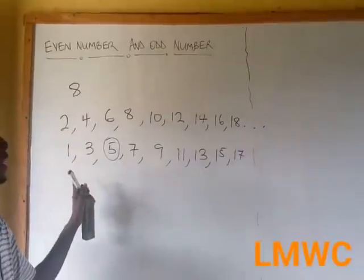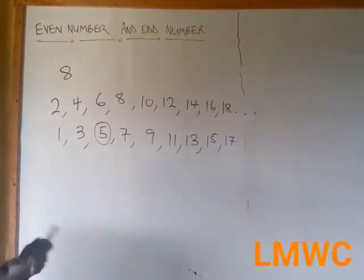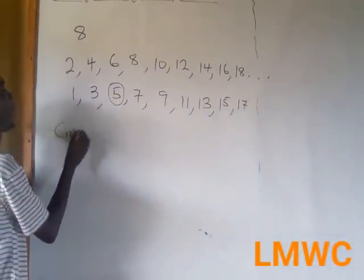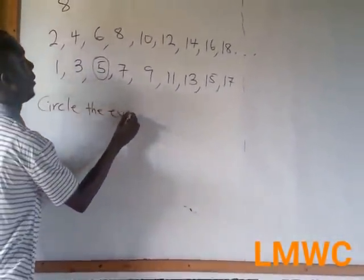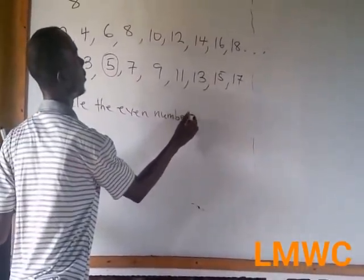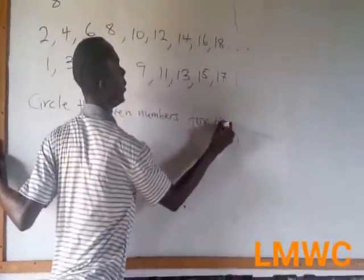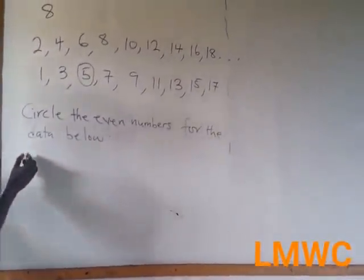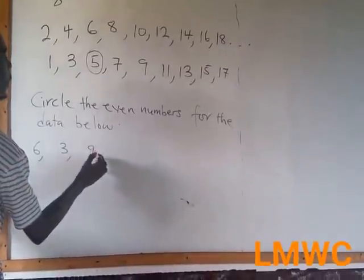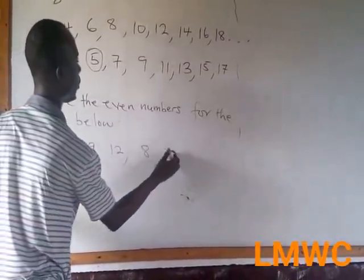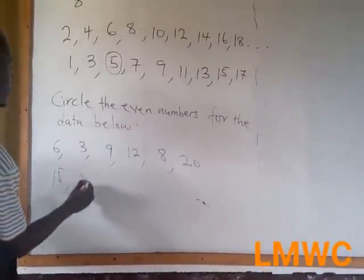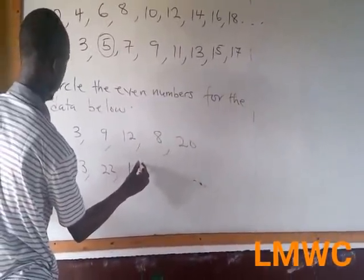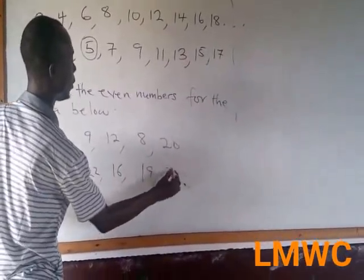2 people can't share this. So I can give you a question and ask you to circle the even numbers from the data below. So now, the even numbers here: 3, 9, 12, 8, 20, 15, 13, 22, 16, 19, 32.